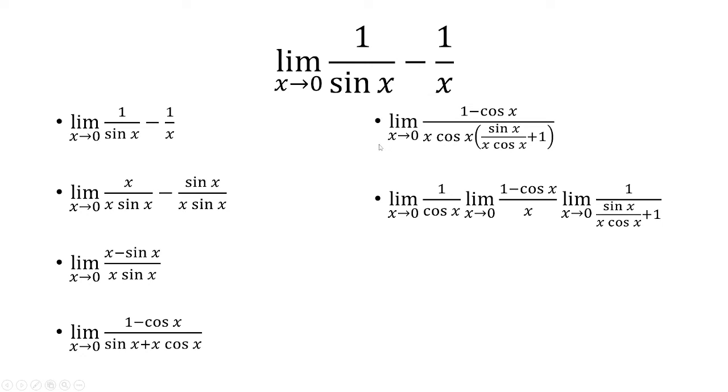From here, we can split this up. We have cosine of x as one of the factors. Think of that as like 1 over cosine of x. And then we have 1 minus cosine of x over x as a second factor. And then the third factor is the sine of x over x cosine of x plus 1.